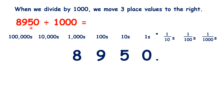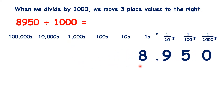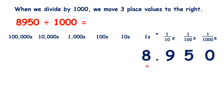So what is 8,950 divided by 1,000? We move three places to the right, and that gives us 8.950.